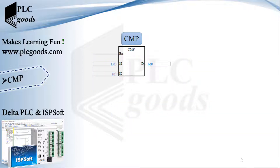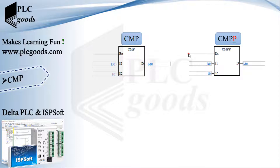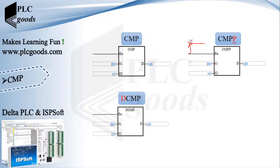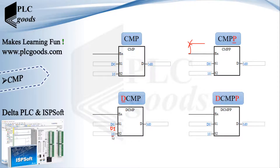If the first input is less, M2 will be 1. Note that there are three other similar instructions. The CMPP instruction works similarly but it's only sensitive to rising signal edges, not to its level. The next similar instruction is DCMPP, which works with double word memories — in other words, memories with 32 bits. Finally, DCMPP instruction works based on 32 bits and is also sensitive to rising signal edges.